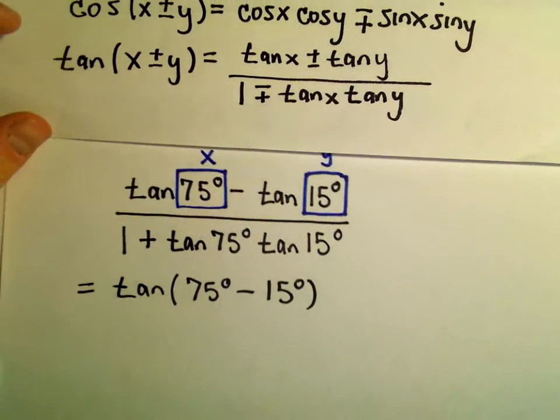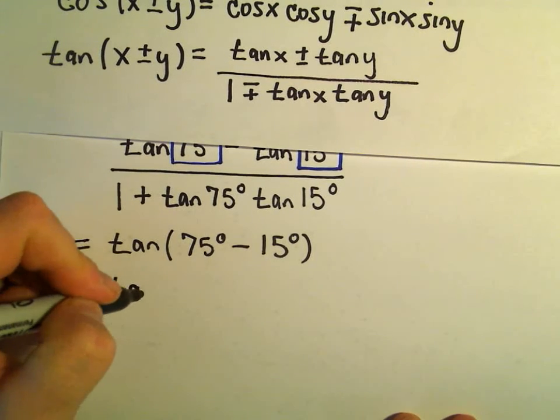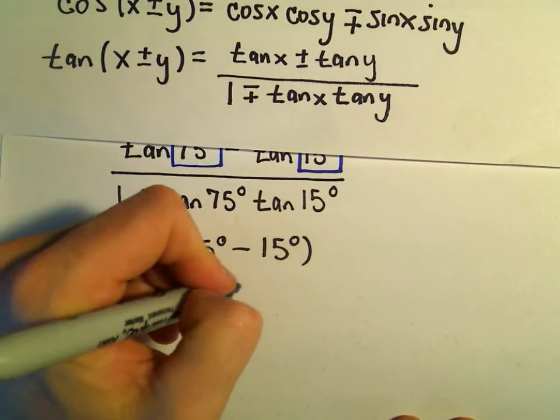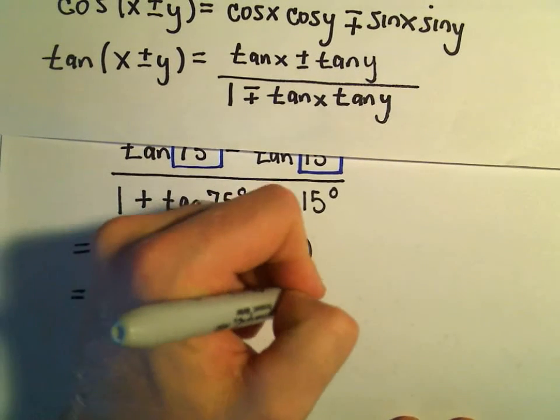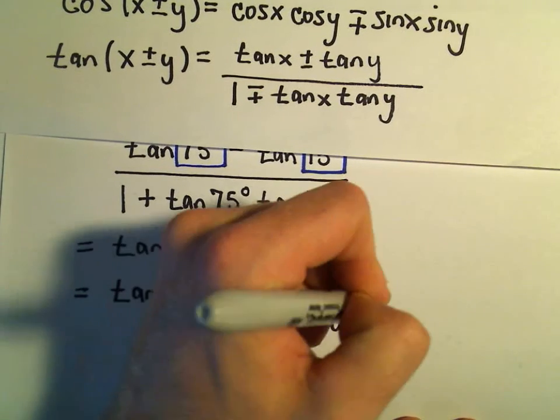So really, we're just evaluating tangent of 75 degrees minus 15 degrees, which is going to be tangent of 60 degrees. But hey, that's just sine of 60 degrees over cosine of 60 degrees.